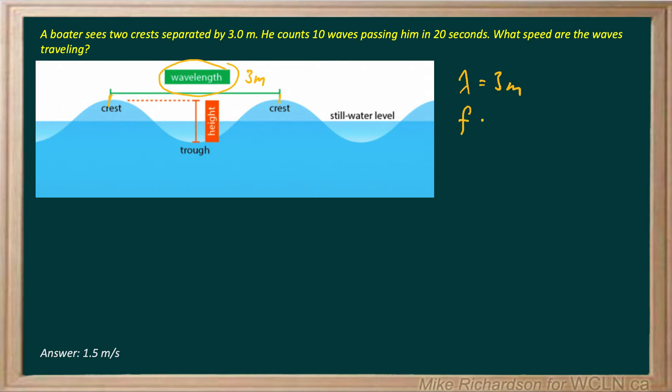Now frequency is the number of waves per second. So that can literally be the formula. There's 10 waves passing in 20 seconds. So 10 divided by 20, that means half a wave passes per second. So there's 0.5 waves per second, which is the same thing as hertz, 0.5 hertz.